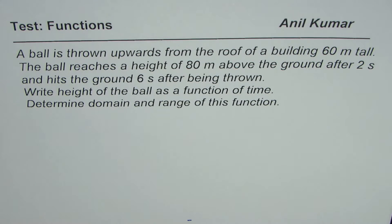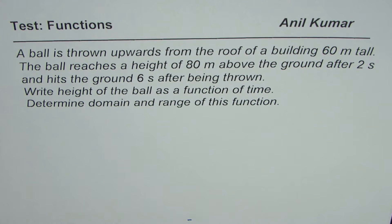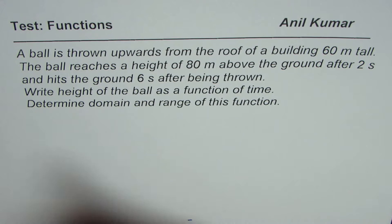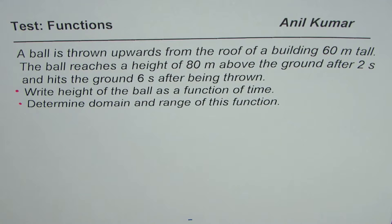I'm Anil Kumar and here is a very good question from the previous test paper on functions — pre-calculus. A ball is thrown upwards from the roof of a building 60 meters tall. The ball reaches a height of 80 meters above the ground after 2 seconds and hits the ground 6 seconds after being thrown. Find the height of the ball as a function of time, and determine the domain and range of this function.